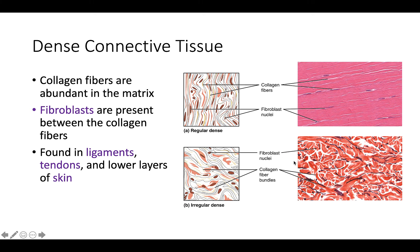The second type has collagen fibers in all different directions — irregularly shaped, very random and disordered. This irregular dense connective tissue forms the deeper layers of our skin. The irregular and random arrangement gives this tissue great strength in all directions, but less strength in one particular direction. So regular dense connective tissue is good for returning a ligament to its resting state, while irregular dense provides general strength. We'll find regular dense in ligaments and tendons, and irregular dense in the lower layers of the skin. Fibroblasts are what secrete the collagen fibers.